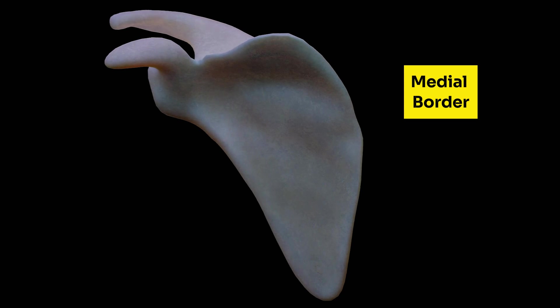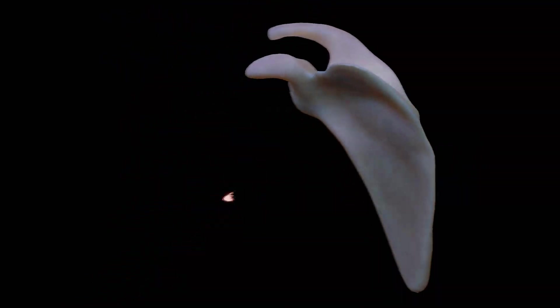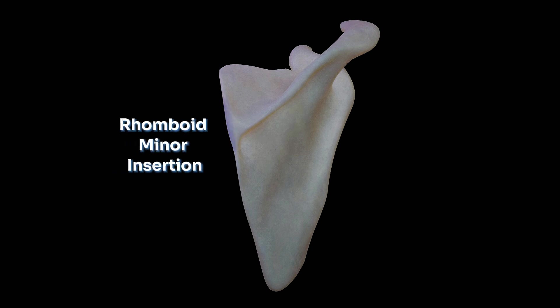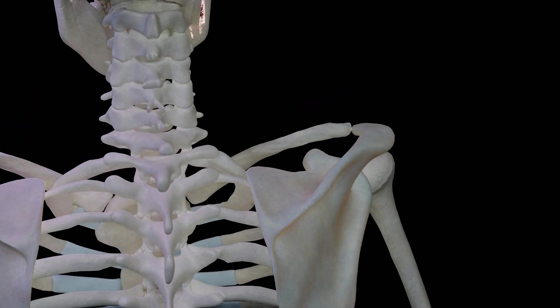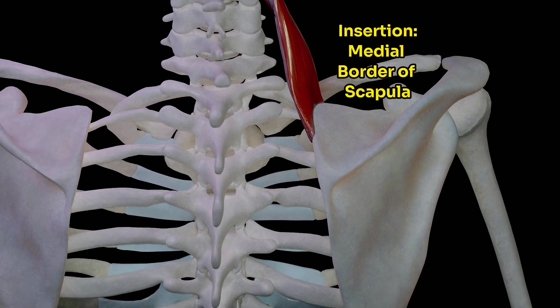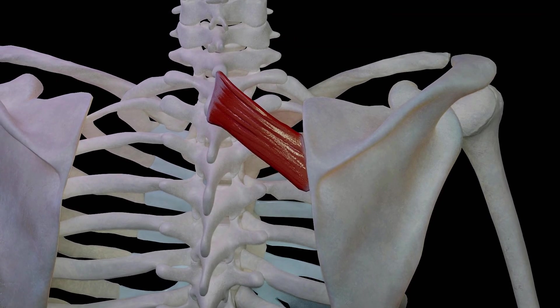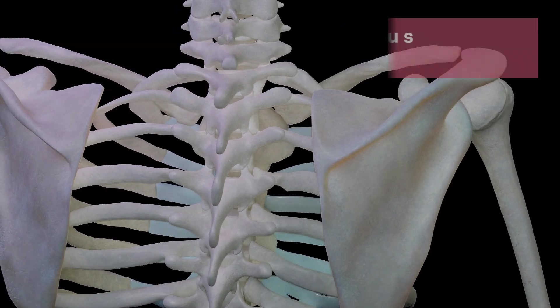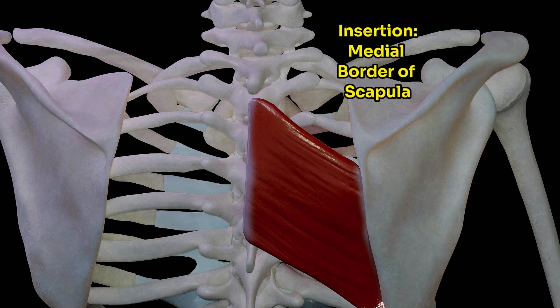The medial border on the costal surface receives the insertion of serratus anterior as discussed before. On the dorsal surface, just above the spine, the medial border receives the insertion of the levator scapulae muscle. In front of the apex of the spine, it receives the insertion of rhomboidus minor muscle, and below the apex of the spine, the medial border receives the insertion of rhomboidus major muscle. The levator scapulae arises from the transverse processes of the cervical vertebrae. Rhomboidus minor originates from the spines of C7 and T1 vertebrae, and rhomboidus major arises from the spines of T2 to T5 vertebrae — all inserted onto the medial border of the scapula.